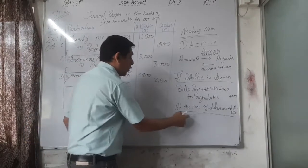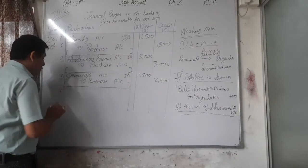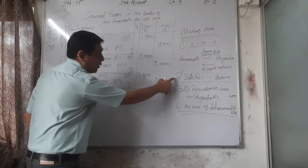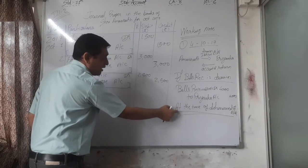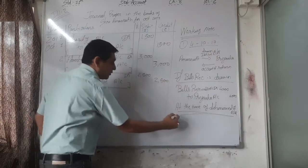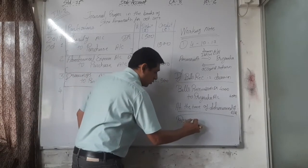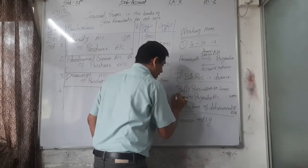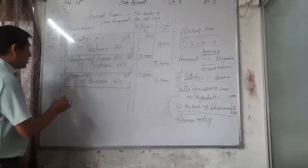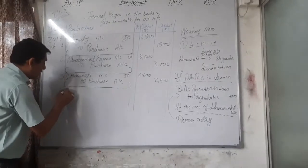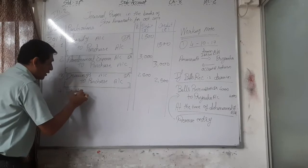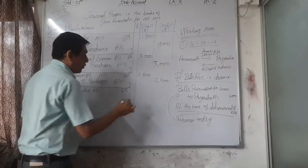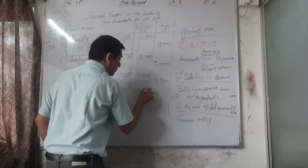At the time of dishonor, we write the reverse entry. At the time of issue the entry was: bills receivable account debit, to Priyanka account. At the time of dishonor, the reverse entry is: Priyanka account debit 4,000 to bills receivable account 4,000. Being: Priyanka's bill of rupees 4,000 dishonored.